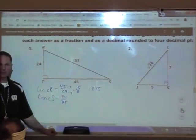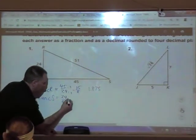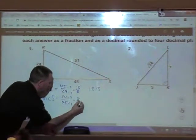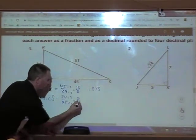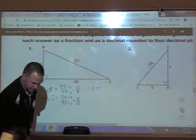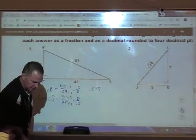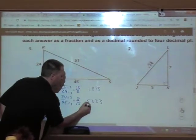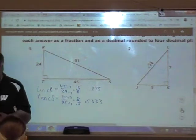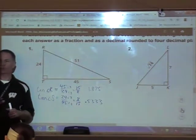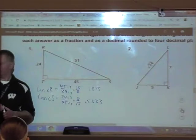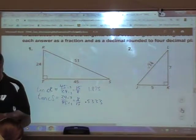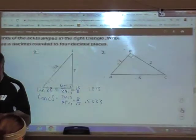Then we reduce it if you can. And then use your calculator. I'm going to reduce it by three again. And that gives me eight fifteenths. 0.5333. Remember, four decimal places. We got it right. Now some of you are still catching up. Now. Number two.